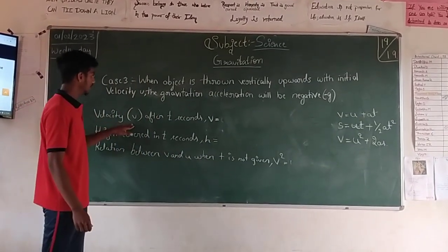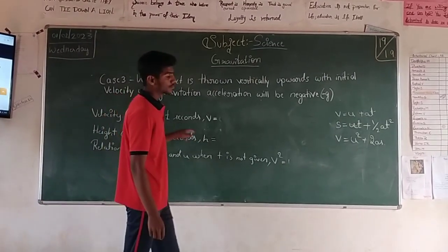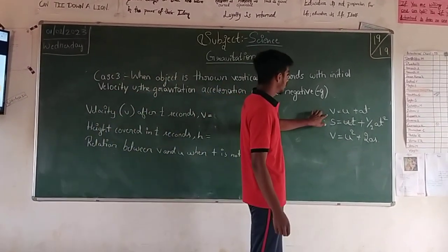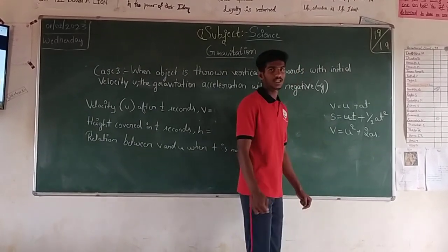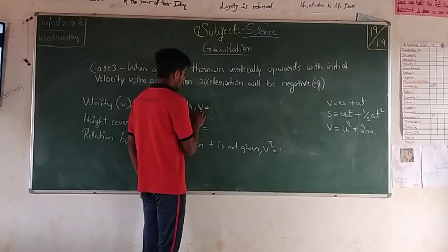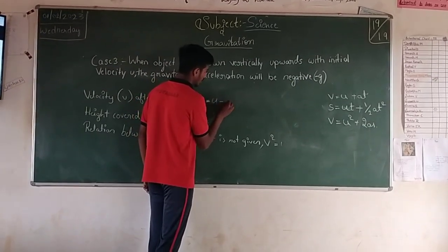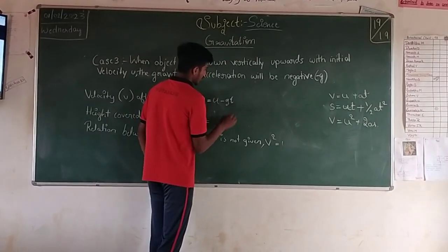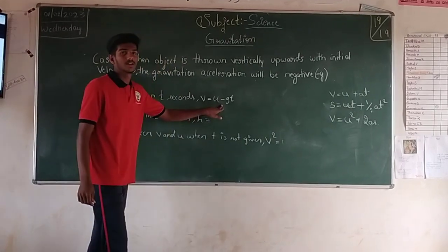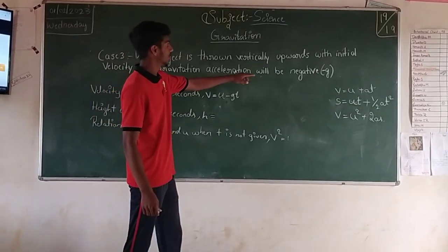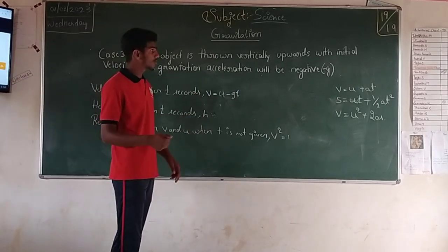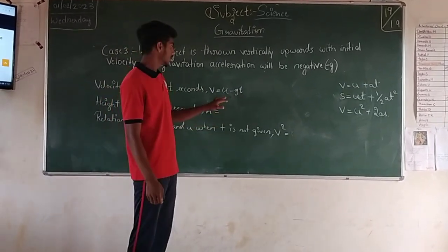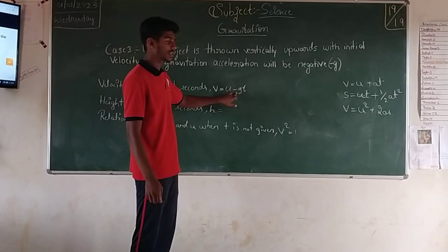Velocity V after T seconds. The expression we learn is V equals U plus AT. In this expression, we are learning that V equals U minus GT. We use minus because it is going vertically upwards against the gravity. Therefore we have taken minus here.